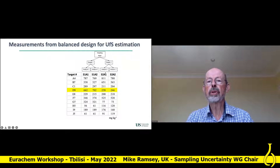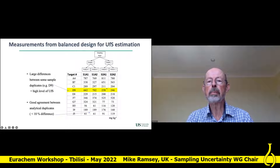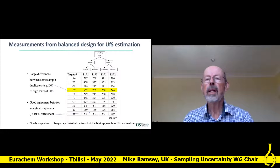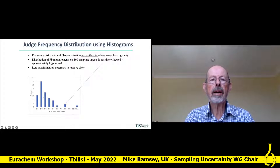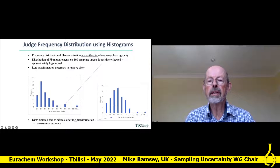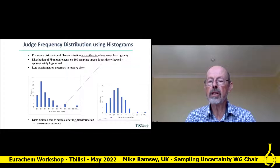Here's the design: sample one with two analyses, sample two with two analyses. You can see that the analytical replicates generally agreed quite well, but there are some large differences between sample duplicates, reflecting the heterogeneity on this site. Before we do more statistics, we need to inspect the frequency distribution. These are the lead concentrations expressed as a histogram across all 100 locations, and you can see a very skewed distribution. When we do log transformation — taking logs of the concentration values to base e — it becomes almost normal, so it was log-normal in the first place.